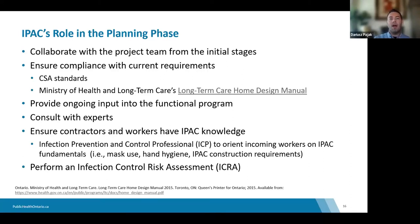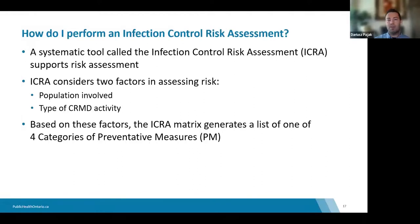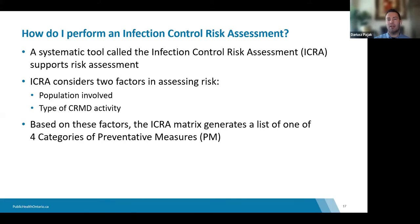How does one perform a risk assessment? Luckily, assessing risk is a lot less involved than you may think. There is a risk assessment tool called the ICRA — Infection Control Risk Assessment. This tool essentially considers two factors: the population where the work is occurring, and the type of work being undertaken. Cross-referencing these two factors generates a preventive measure category, and for each category there is a list of requirements to guide next steps.